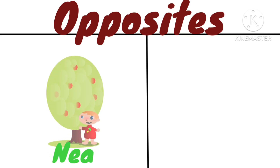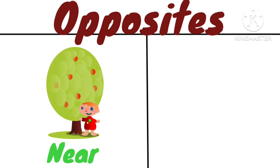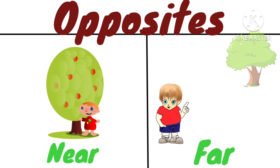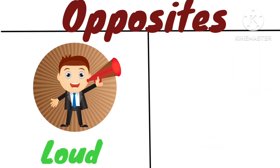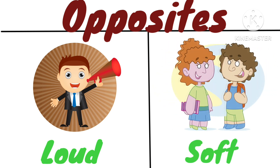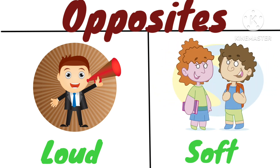Opposite of near is far. The boy is standing near the tree, and the boy is standing far away from the tree. Opposite of loud is soft. The boy is speaking very loudly, and the children are talking very softly.